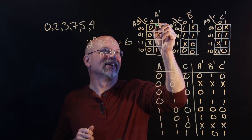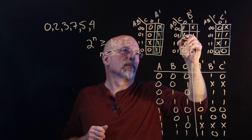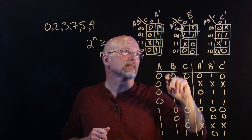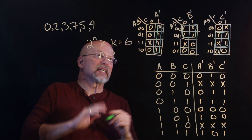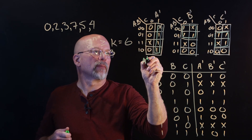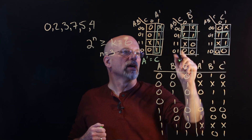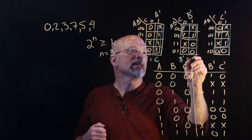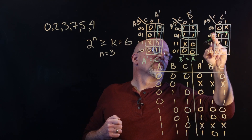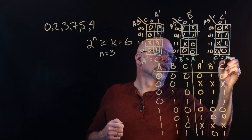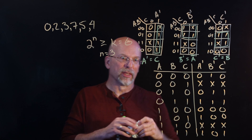From the K-maps, with the don't-cares filled in to simplify the groups: A-prime equals C — whenever C is 1, A-prime is 1. B-prime equals A-bar — whenever A is 0, B-prime is 1. C-prime equals B — whenever B is 1, C-prime is 1. These are remarkably simple expressions.